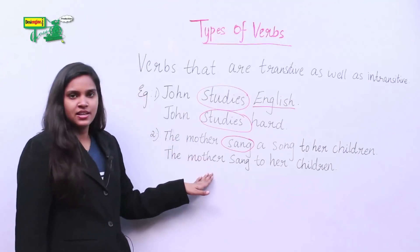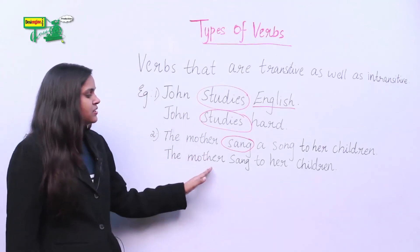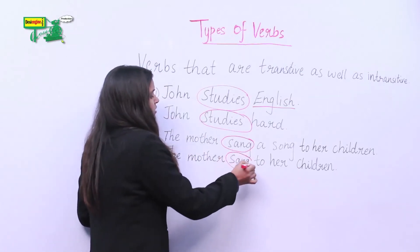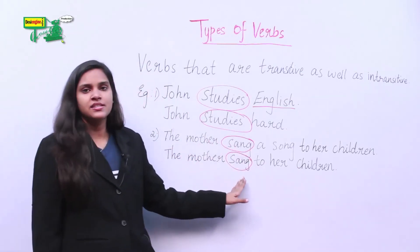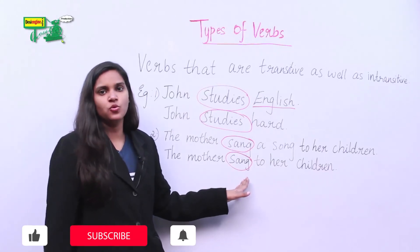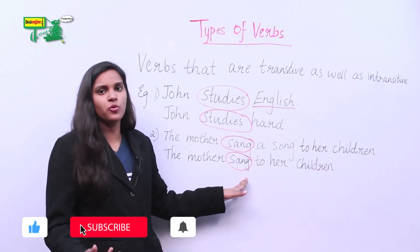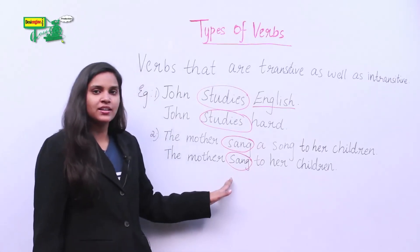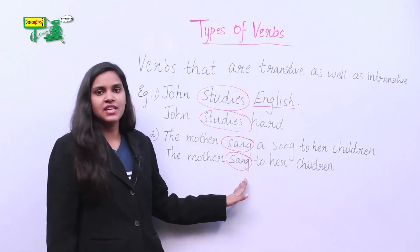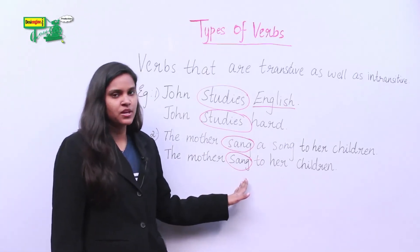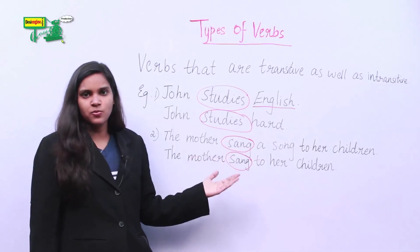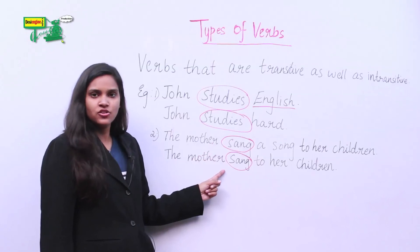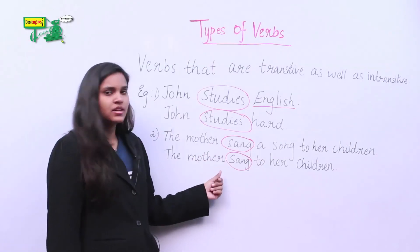Let's take another sentence: The mother sang to her children. In this sentence 'sang' is a verb, but it does not answer the question 'what?' — sang what? — we do not get an answer. Therefore 'sang' is our intransitive verb here. The same verb 'sang' acts as a transitive verb in one sentence and as an intransitive verb in the other.